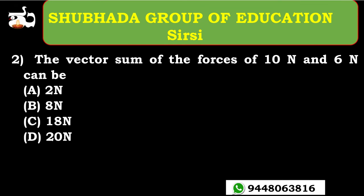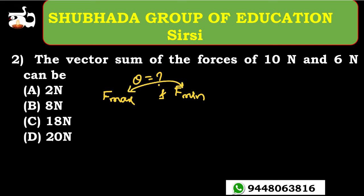Now the next problem: the vector sum of forces of 10 Newton and 6 Newton can be? This is a very good problem. They have not given the exact angle theta. So in such cases, you need to find out the maximum force and the minimum force. The resultant force must lie between maximum and minimum.